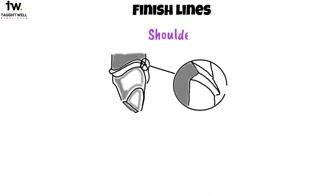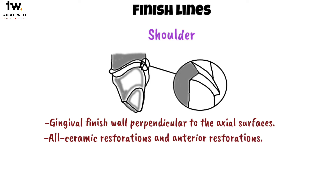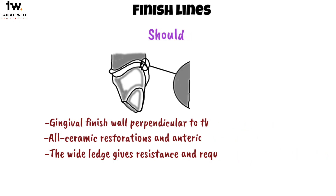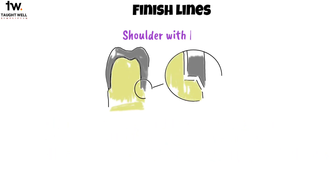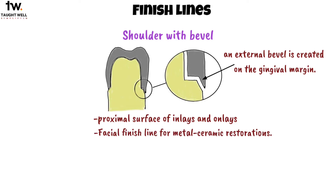Next is shoulder. This is made by a gingival finish wall perpendicular to the axial surfaces. It is used for all ceramic restorations and in anterior restorations where aesthetics is a prime concern. The wide ledge gives resistance and requires more tooth reduction. Next is shoulder with a bevel. This type is similar to the shoulder, but the only difference is that an external bevel is created on the gingival margin. These are used on the proximal box of inlays and onlays and can be used as a facial finish line for metal ceramic restorations.